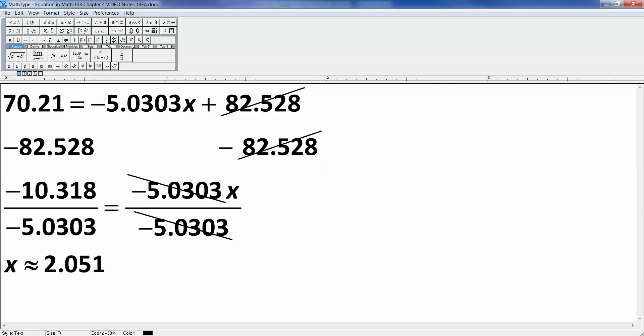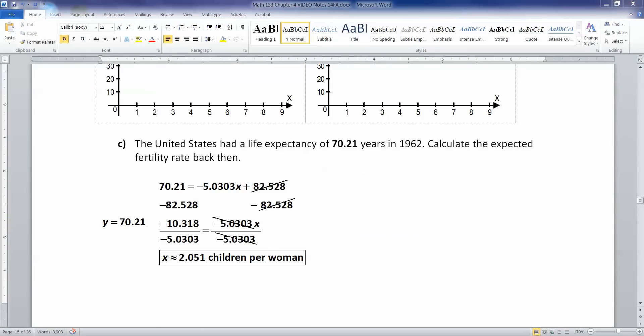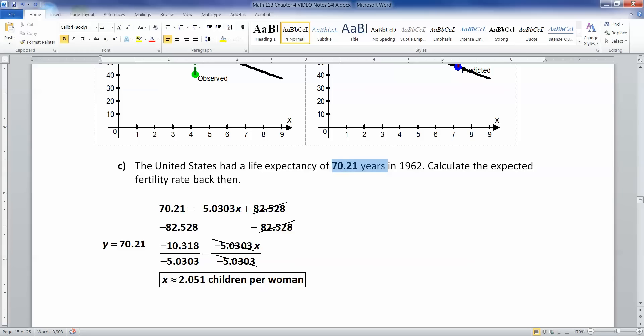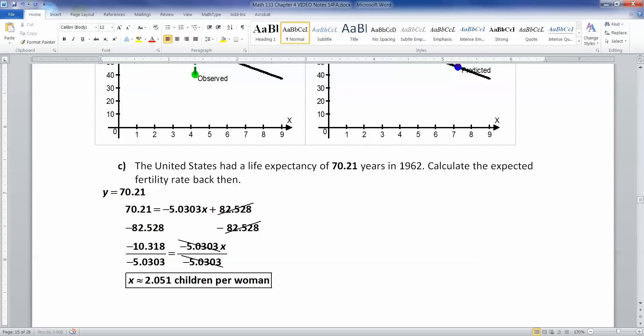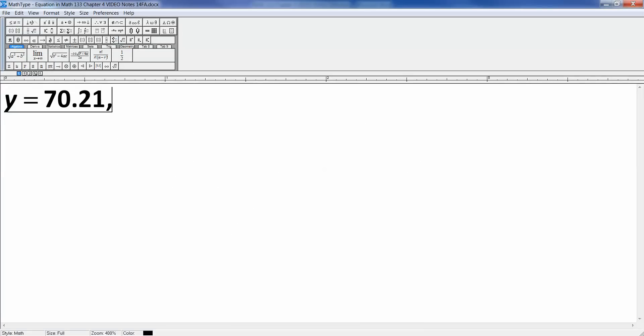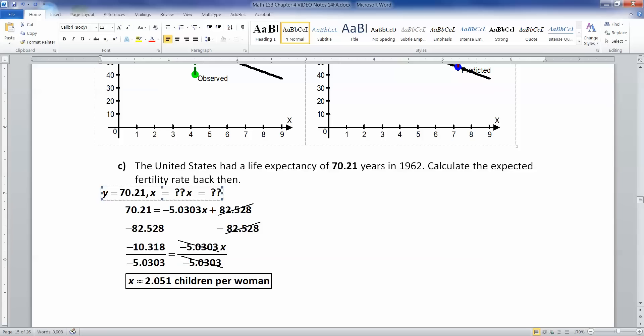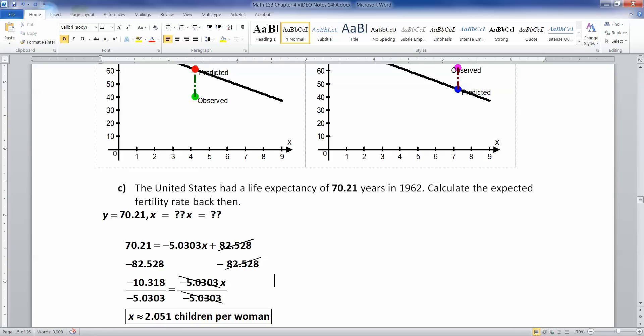And that would be children per woman, right? Children per woman. You always want to have units for something like this. If this is a real-life problem, it has data units. In this case, it was children per woman because you're going to find your X, the fertility rate. So we took the life expectancy, which was Y, plugged it in for Y, and then used algebra to solve for X. All right, I'm going to put this right here. So that's what we were doing. And then we solve for it. All right, so we've had a little bit of algebra. Solving for a variable X in everything. That's great.